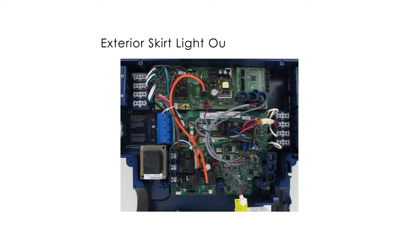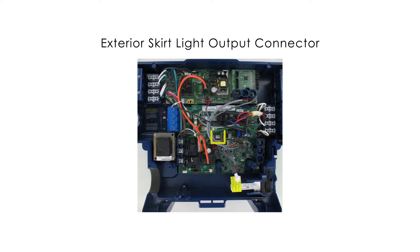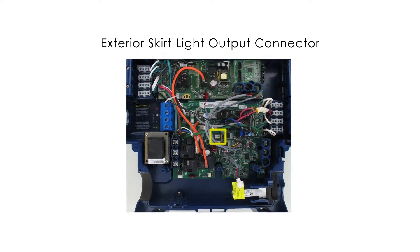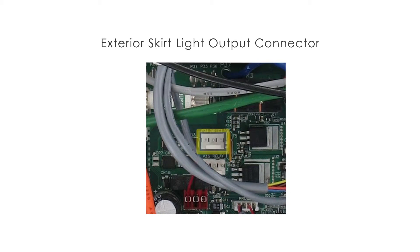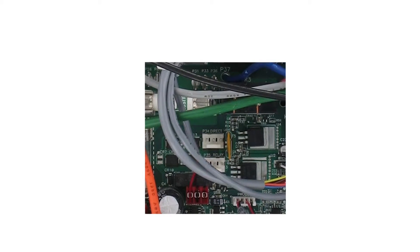The exterior skirt light output connector feeds 12 volt AC to the skirt light PC board. The PC board then converts it to DC to power the LEDs. This connector is always powered.